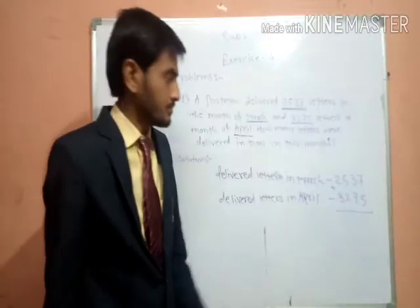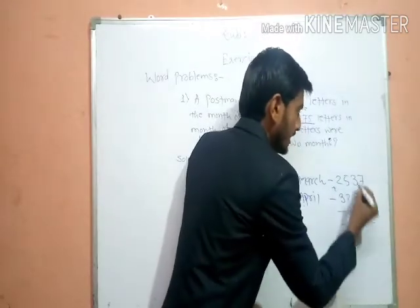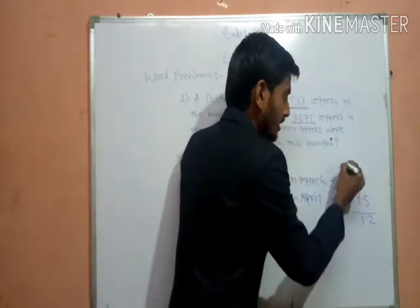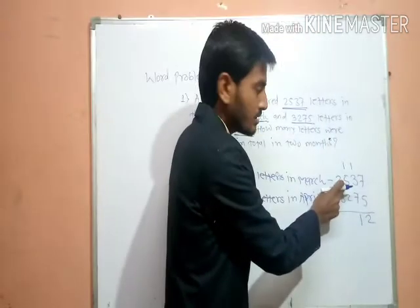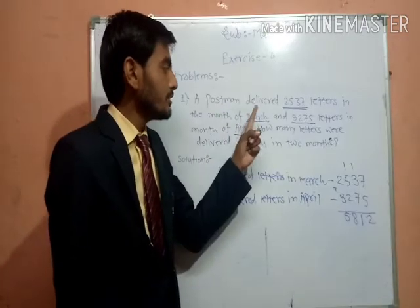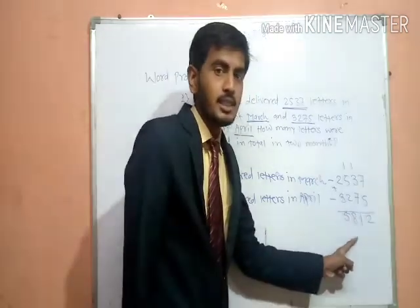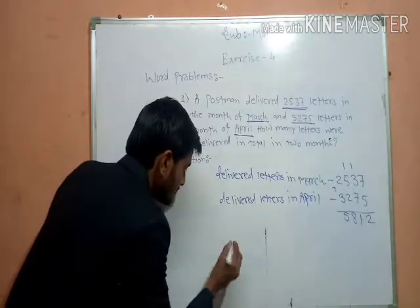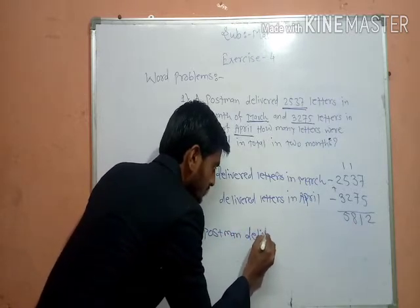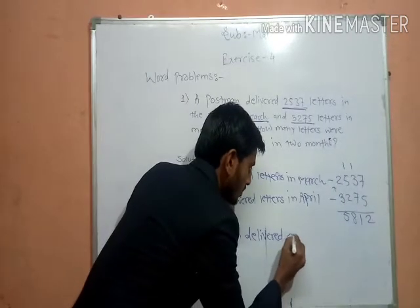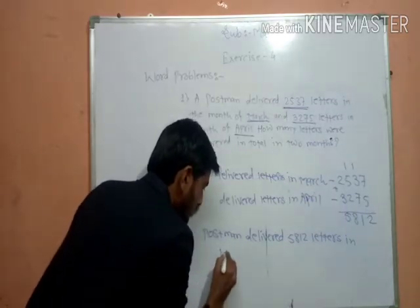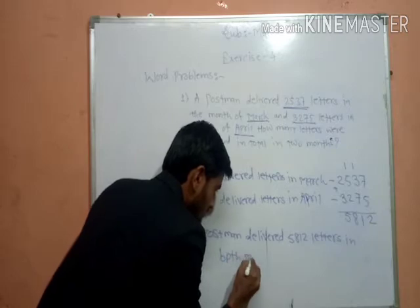So add both the numbers. 7 plus 5 is 12, carry 1. 3 plus 7 is 10, plus 1 is 11, carry 1. 5 plus 2 is 7, plus 1 is 8. 2 plus 3 is 5. The postman delivered 5,812 letters in both months.